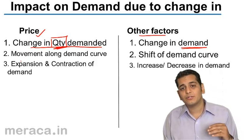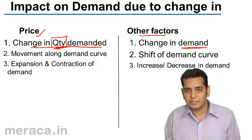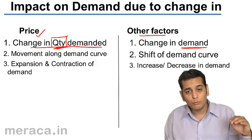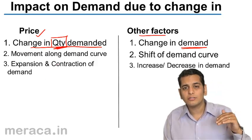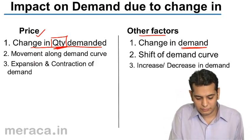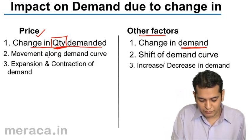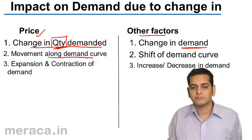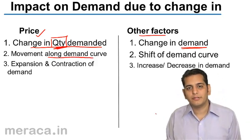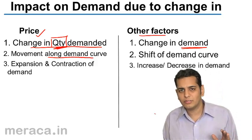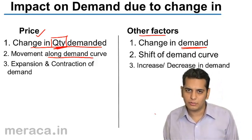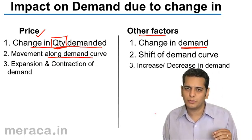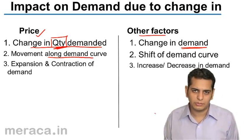When there is a change in quantity demanded, we tend to move along the demand curve. There is a movement along the demand curve. If we move upwards, we call it contraction. If we move downwards, we call it expansion.